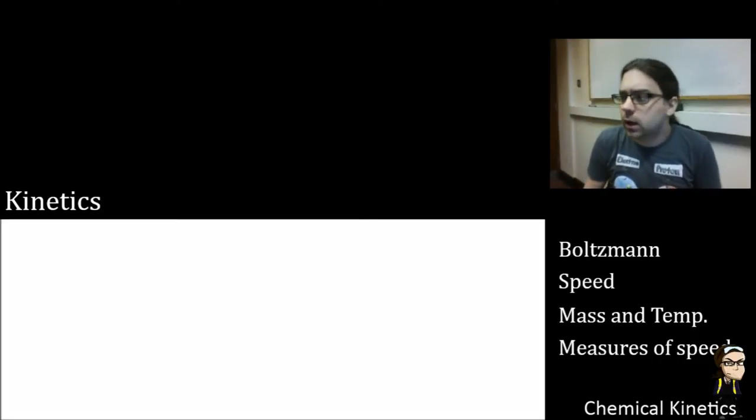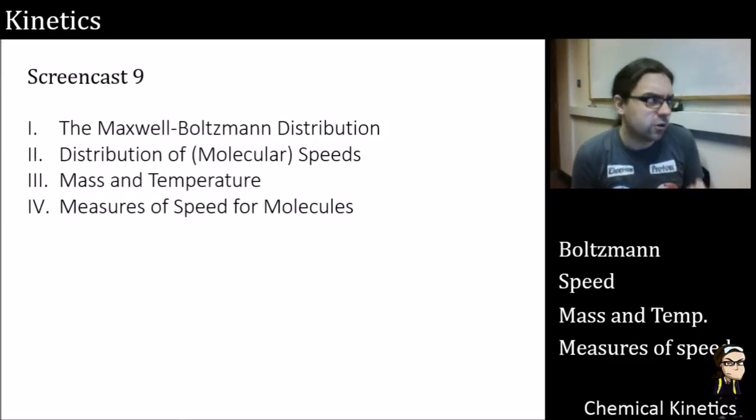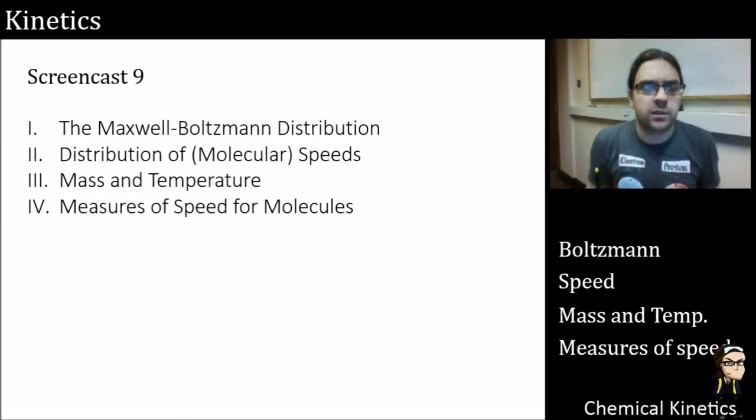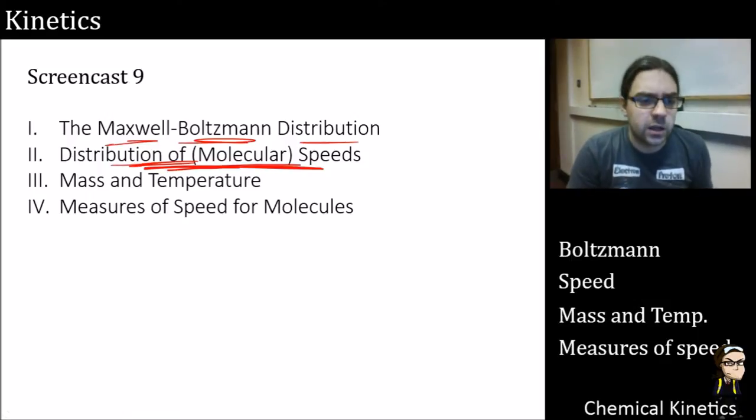Welcome back to Screencast 9. The last one, that semi-optional one, did a lot of derivation about why we're interested in root mean squared speeds and pressure, relating those two things together. This is going to be thankfully a little bit more qualitative, less derivation, but still quite a bit of analyzing equations. We're going to introduce the Maxwell-Boltzmann distribution, relate it to things like distribution of molecular speeds, see how mass and temperature affect it, and then finally go into a few measures of speed.